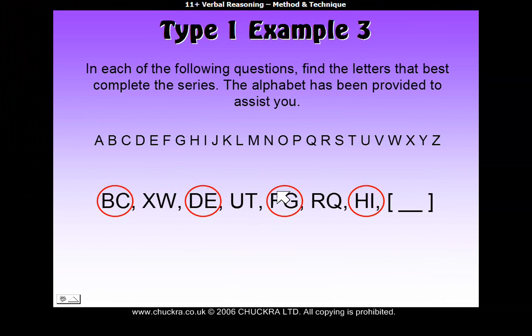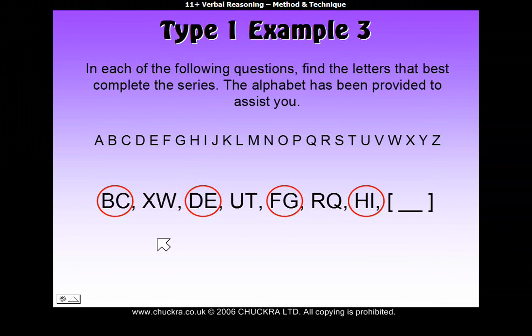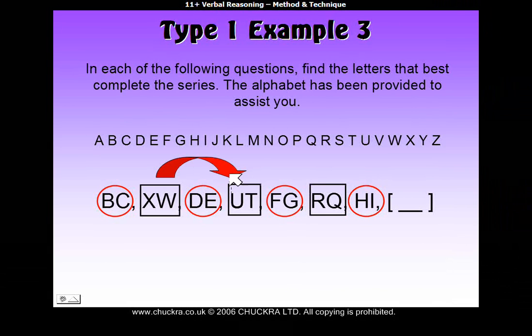Now, what we've got here, we're looking at every other pair of letters marked on by the red circles. You see here, BC, DE, FG, and HI. And then, the second sequence are the ones in between. Now, in this particular example, if you can see here, we'd actually need to use the second sequence in order to get our answer.